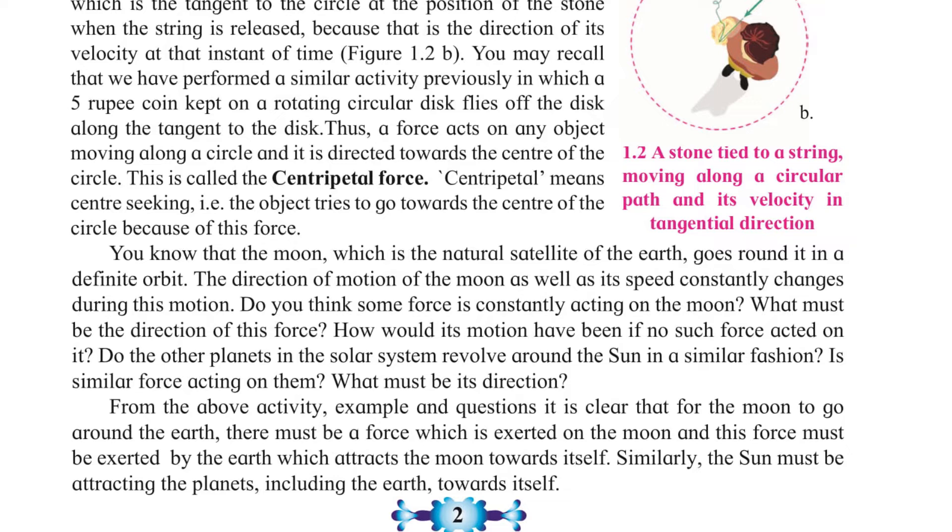Centripetal means center-seeking—that is, the object tries to go towards the center of the circle because of this force. You know that the moon, which is the natural satellite of the earth, goes round it in a definite orbit. The direction of motion of the moon as well as its speed constantly changes during this motion.